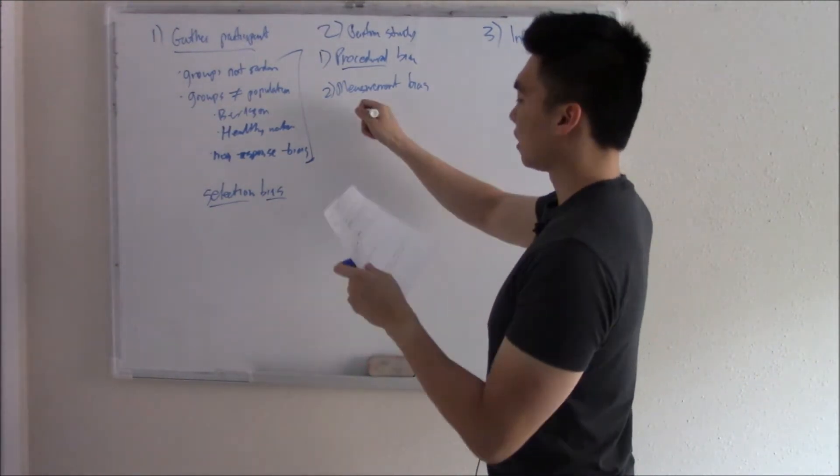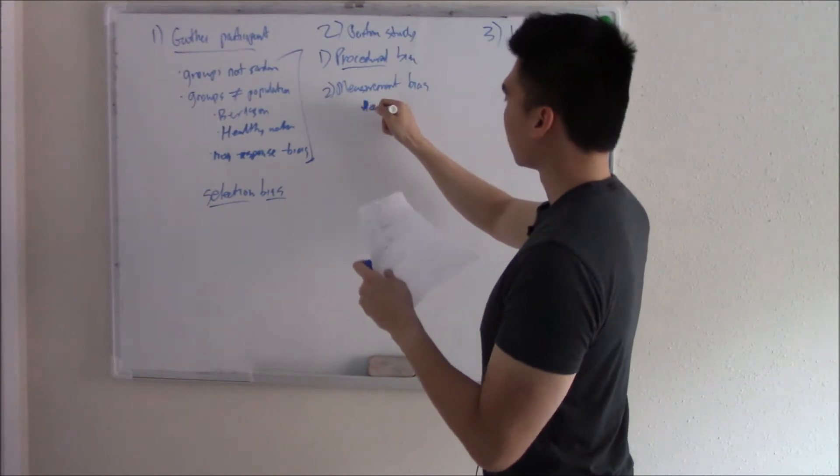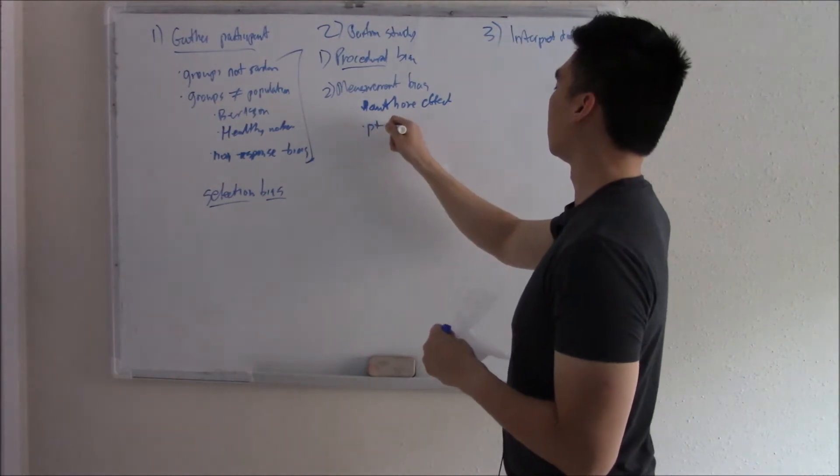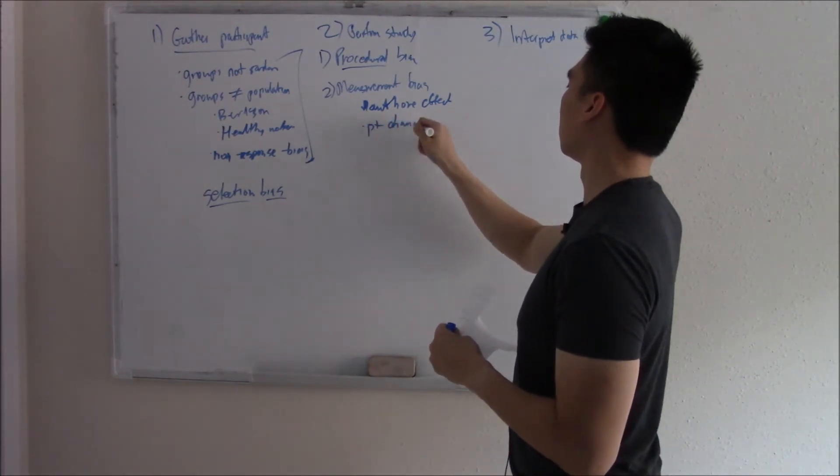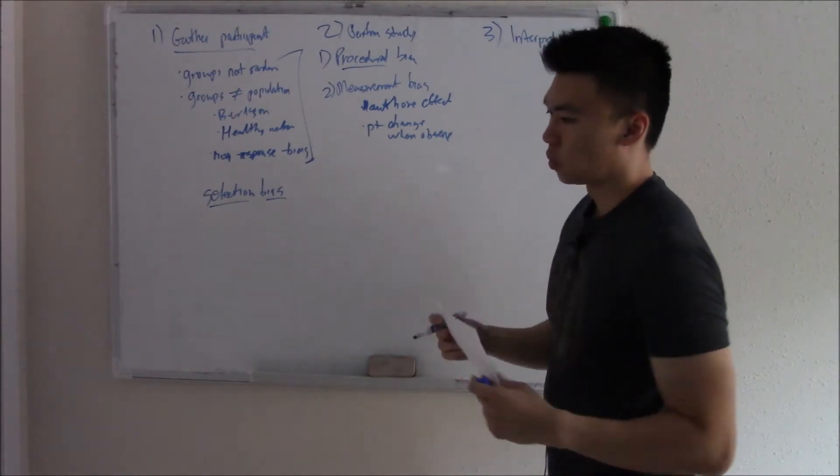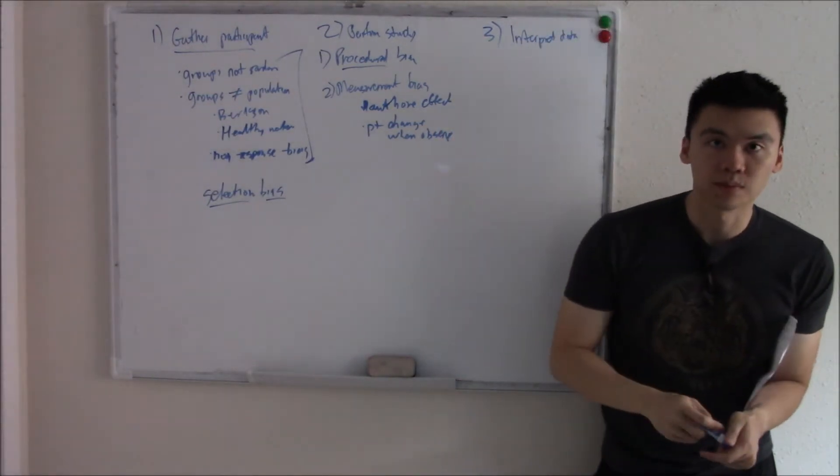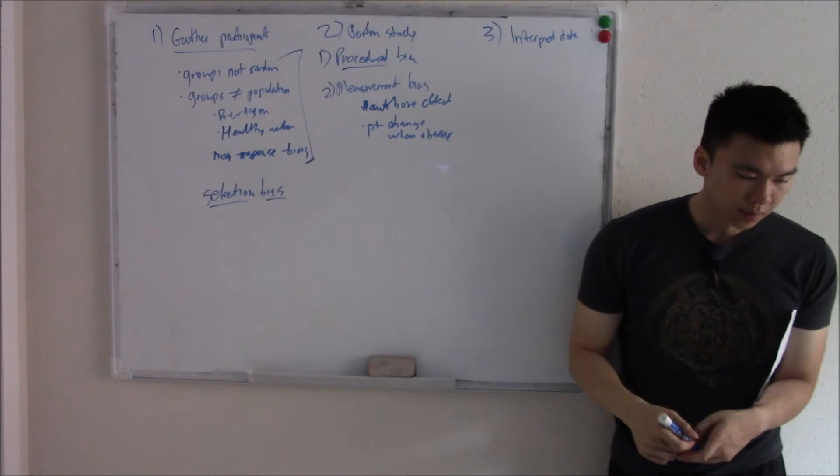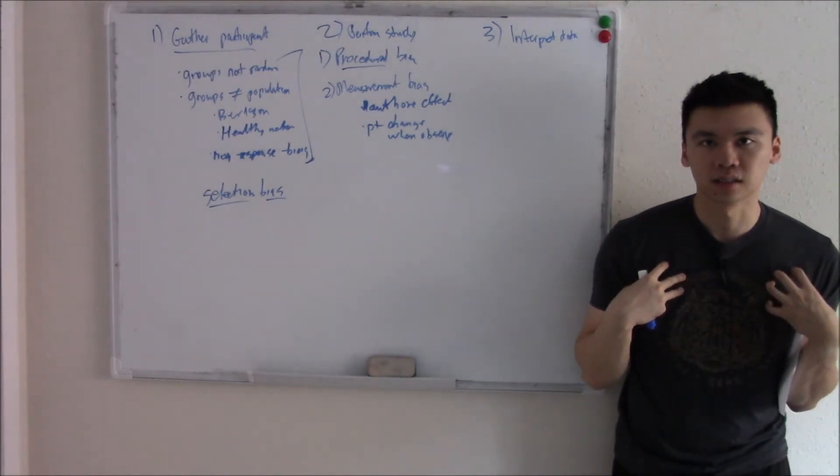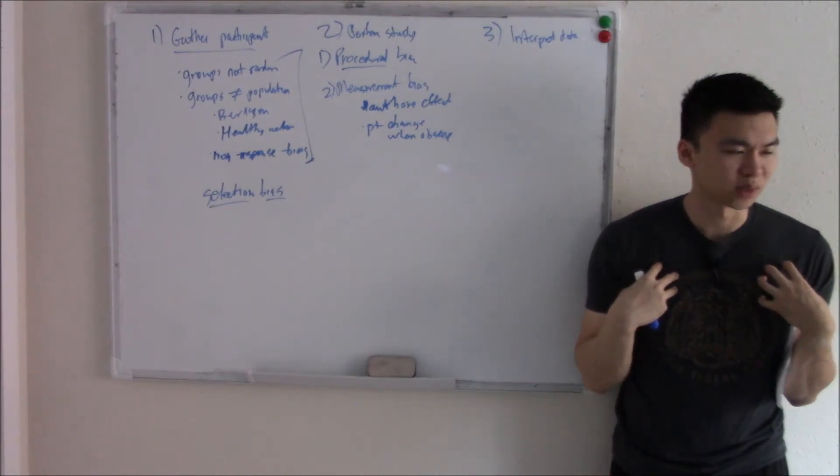A subcategory of this is the Hawthorne effect. This is when patients change when observed. For example, you want to try a new anti-pain medication. A patient is in 10 out of 10 pain, but they don't want to tell you they're 10 out of 10. They don't want to look weak when they're being observed.